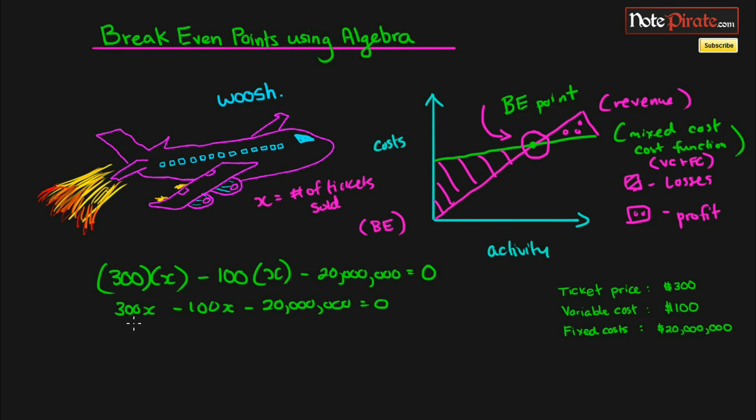Then we'll have 300X minus 100X minus 20 million equals zero. We can combine the like terms, so 300X minus 100X is 200X. Then we can move the 20 million over to the other side by adding it, so we're going to add 20 million to the other side. That way it cancels out on the left side and we're left with 200X equals 20 million.